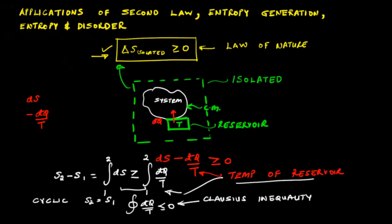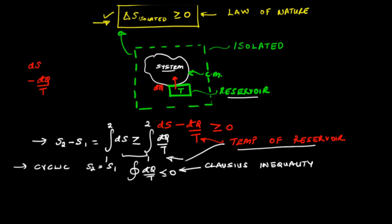Now, if we have a reversible cycle or a reversible process, there is no distinction between the temperatures of the system and that of the reservoir because the heat is being added reversibly. If there is a temperature difference between the system and the reservoir, then there would be irreversibilities. And if there is a temperature gradient within the system, again there would be irreversibilities. So for equality to hold, the temperature must be equal to the temperature of the system and the temperature must be the same throughout the system.